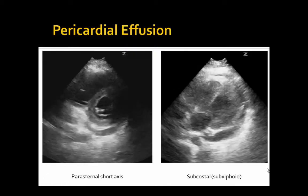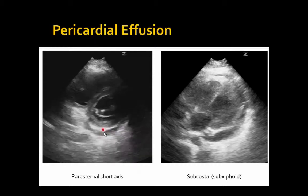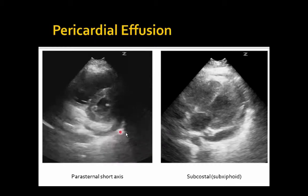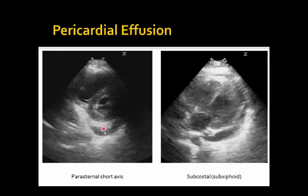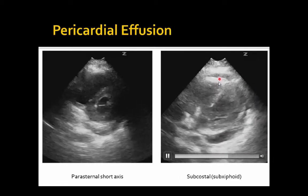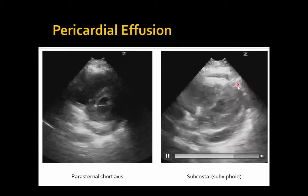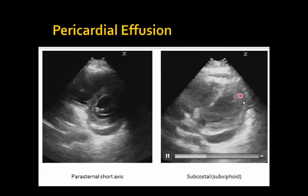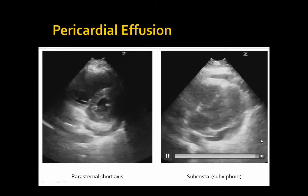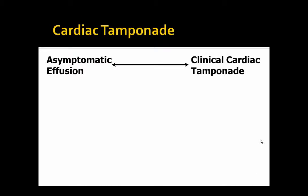Sometimes you'll see both. I love the parasternal short axis view for seeing pericardial effusions — sometimes it's easier to see in this view. Here it is in the dependent area behind the left ventricle. And here in a subcostal subxiphoid view, we see black fluid circumferentially surrounding the heart. Pericardial effusions are hopefully relatively easy to recognize.